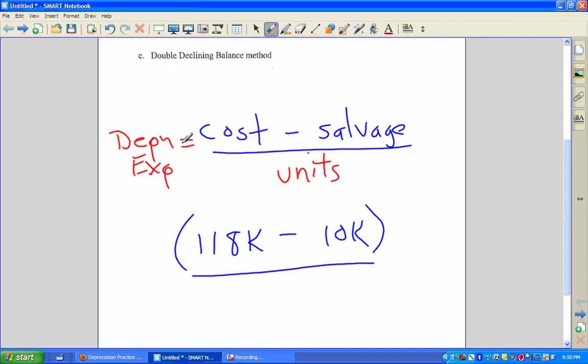And then we have to multiply it by actually the number of units we're going to use that period. So number of units.